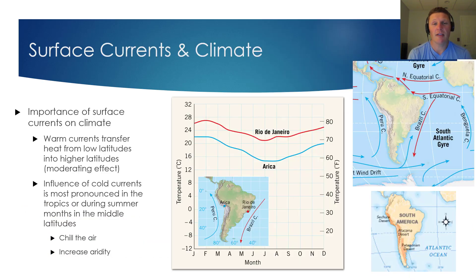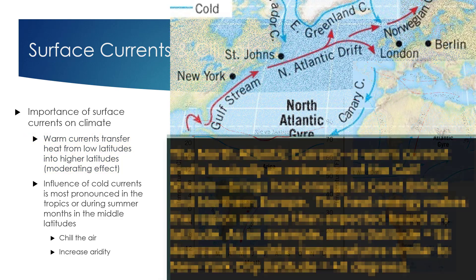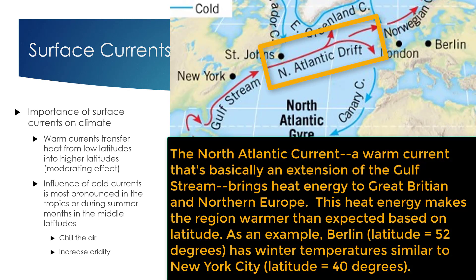To conclude this video, I'd like to discuss the connection between surface currents and climate. Surface currents have significant impacts on Earth's climates. For starters, warm currents transfer heat from the low latitudes into the higher latitudes. As shown in the image on the right, the Brazil current takes warm water from near the equator and transfers it down towards Antarctica, and that movement of heat energy has a moderating effect on Earth's climates. The same can be said about the North Atlantic current, which keeps Great Britain and Northern Europe much warmer than expected based on latitude.